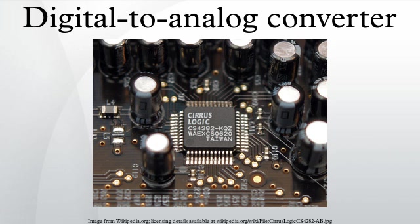The successive approximation or cyclic DAC successively constructs the output during each cycle. Individual bits of the digital input are processed each cycle until the entire input is accounted for. The thermometer coded DAC contains an equal resistor or current source segment for each possible value of DAC output. An 8-bit thermometer DAC would have 255 segments, and a 16-bit thermometer DAC would have 65,535 segments. This is perhaps the fastest and highest precision DAC architecture but at the expense of high cost. Conversion speeds of greater than 1 billion samples per second have been reached with this type of DAC.